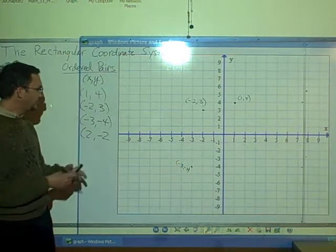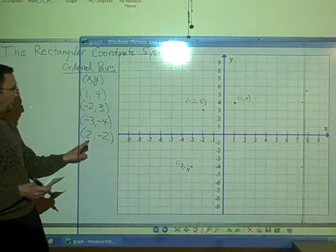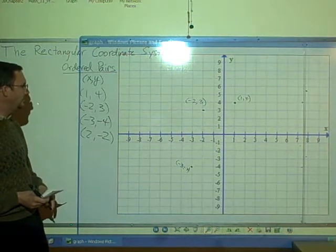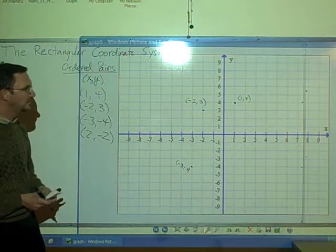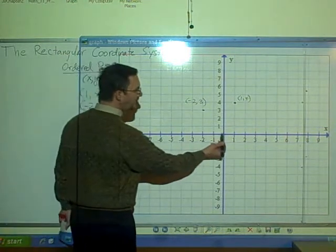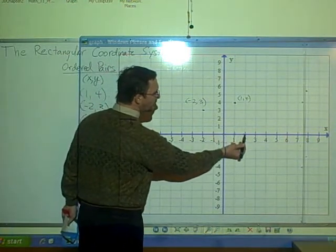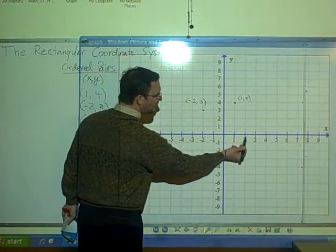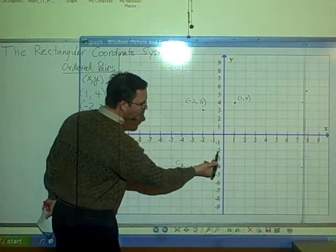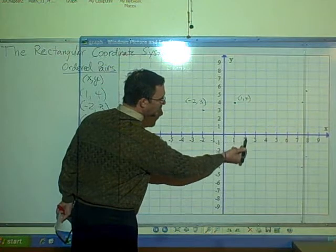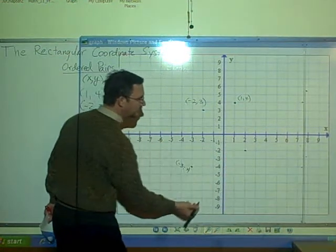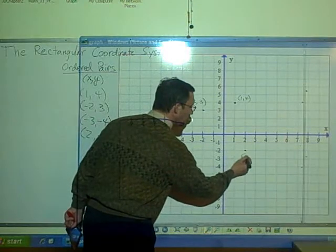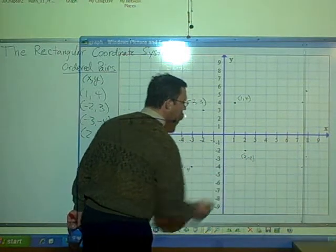My last example is the point 2, negative 2. So here, x is positive, y is negative. So on the x-axis, go over to positive 2. Then follow down along the y-axis to negative 2. So from here down 2 units. This is then the point 2, negative 2.